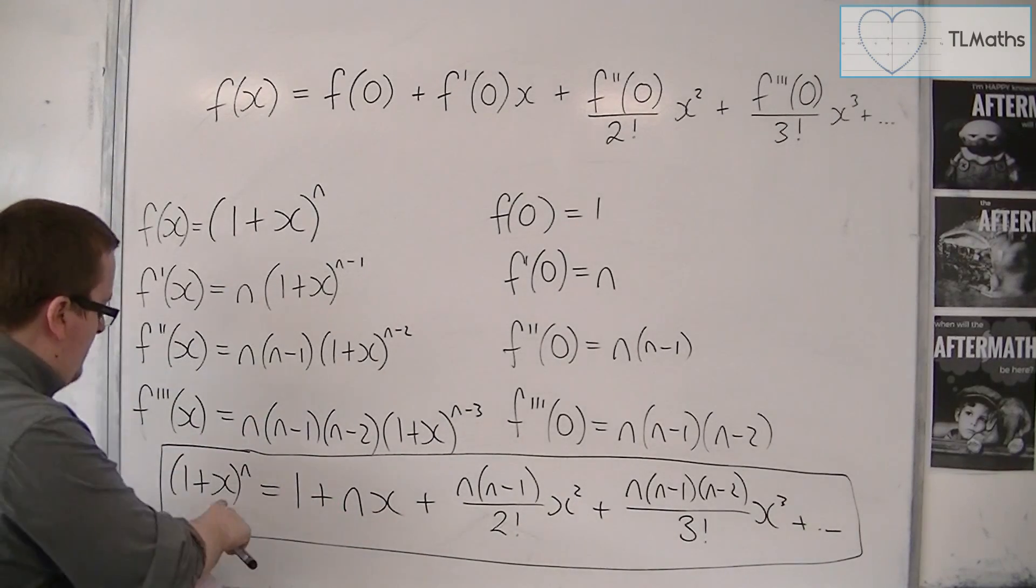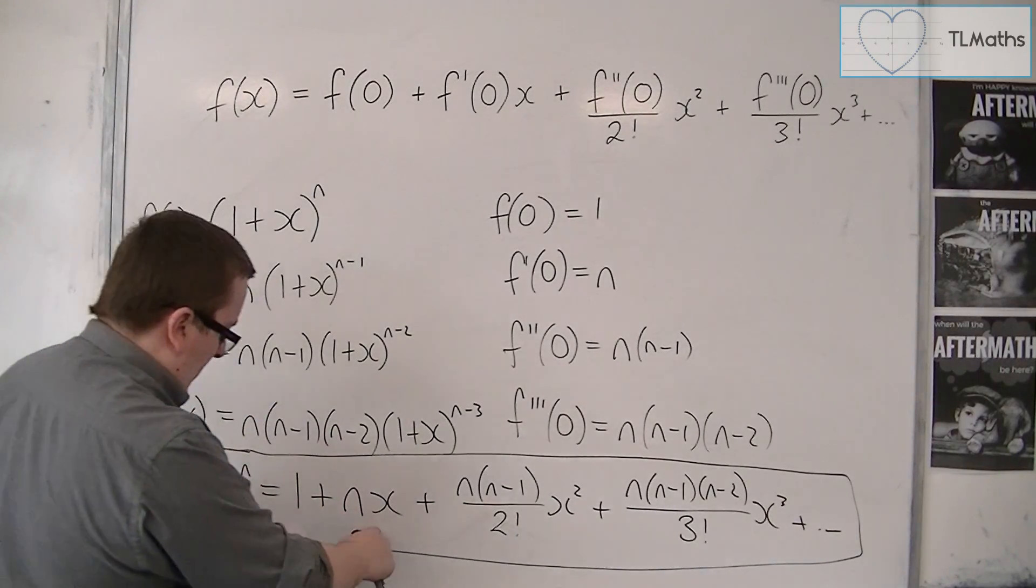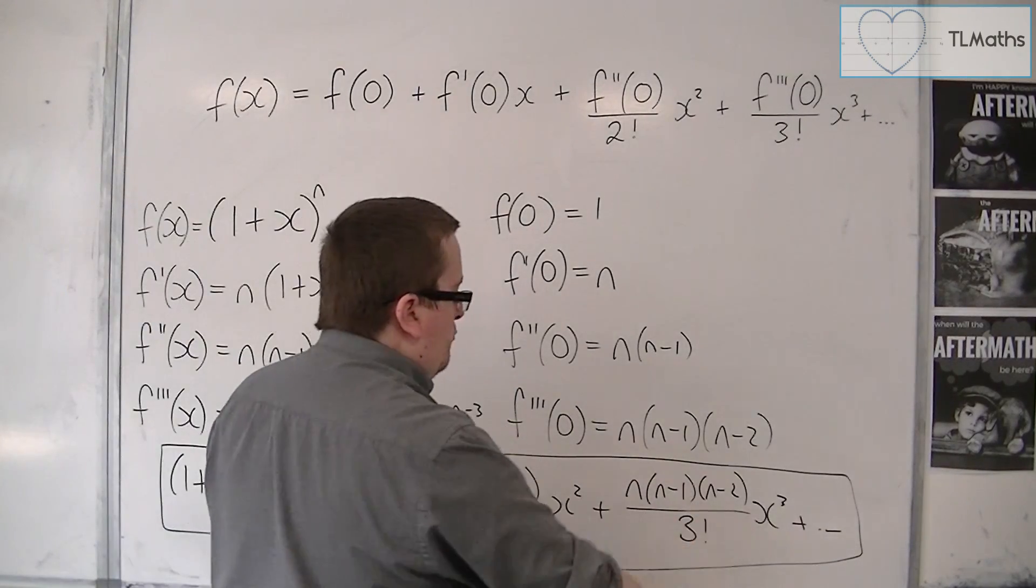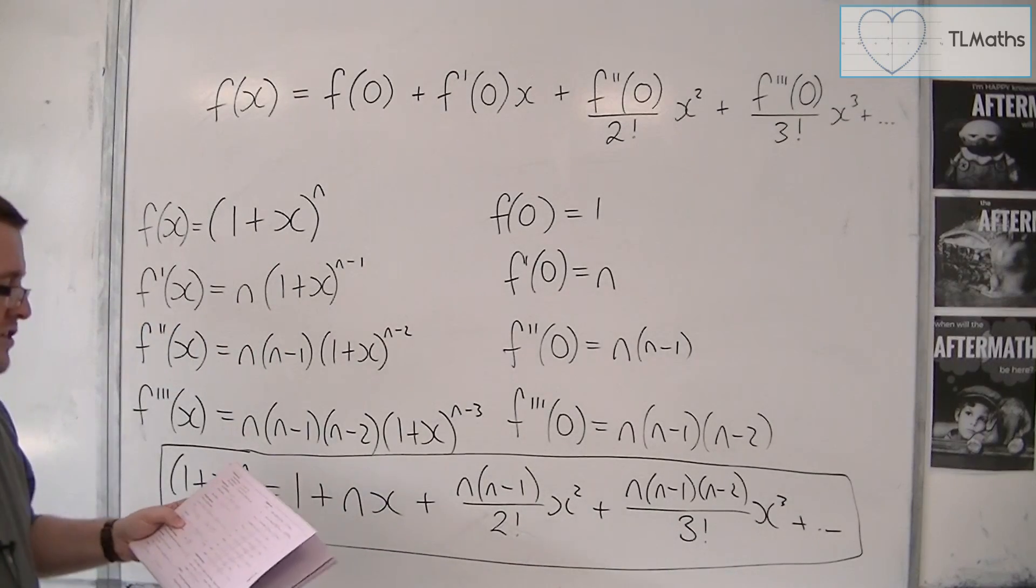And you'll see it as a general case, 1 plus x to the n, 1 plus nx plus n times n minus 1 over 2 factorial x squared. And then it's got a general term rather than the next term, the x cubed term.